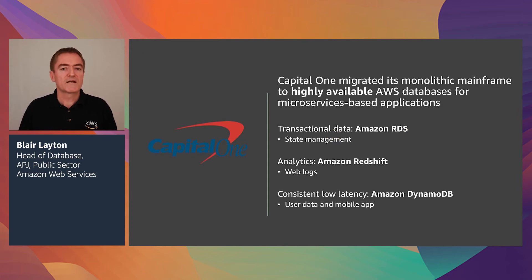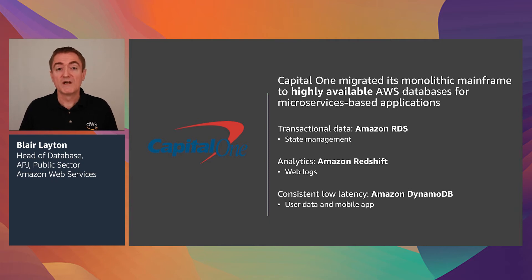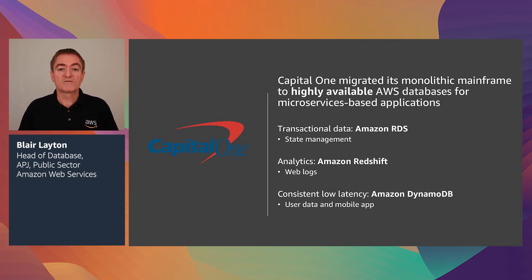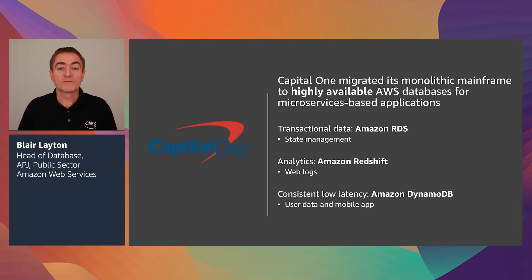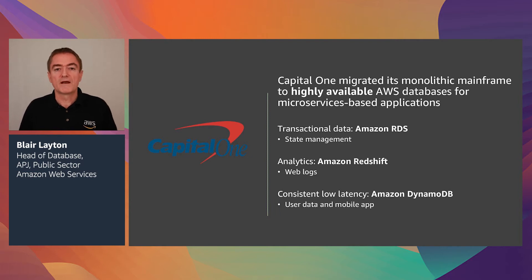Capital One is another customer who has adopted purpose-built database technology. They use Amazon RDS — Relational Database Service — for their transactional state management applications. When they want to look at analytics for their web logs, they put that data into Amazon Redshift for groupings and reporting. And for consistent low latency, they use Amazon DynamoDB for user data and the mobile app. Capital One has their own specific requirements and has used different databases for those specific use cases.